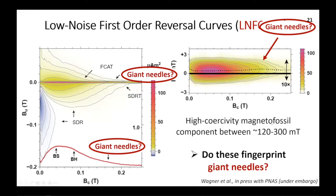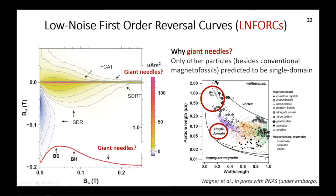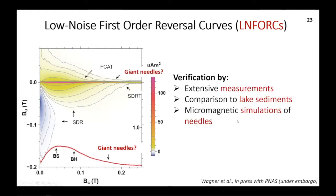We hypothesize that these signatures are related to giant needle-shaped magnetofossils. Giant needles are the only other particles observed in magnetic extracts predicted to have single-domain behavior besides conventional magnetofossils. In a Butler-Banerjee diagram with single-domain limits highlighted by dashed lines, the triangles representing giant needles are the only particles predicted to be single-domain that are not conventional magnetofossils. In addition to our extensive low-noise FORC measurements, we verified these signatures are associated with giant needles by comparing them to well-studied lake sediments and also micromagnetic simulations of needles observed in magnetic extracts.